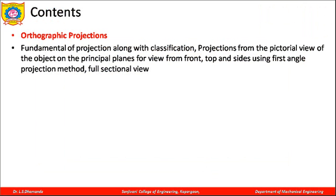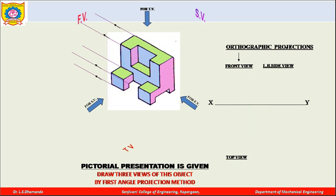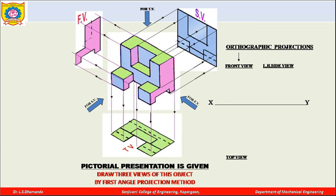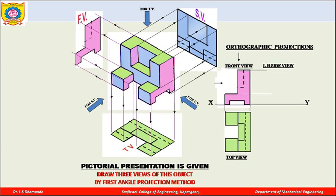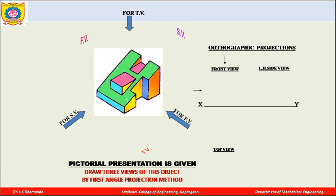Welcome back. We are solving numericals of orthographic projections. We have solved a previous numerical where an object was given and we drew the front view, side view, and top view. These projections are obtained over the XY line — front view above the XY line, top view below, and the side view to the right of the front view since it is a left-hand side view.